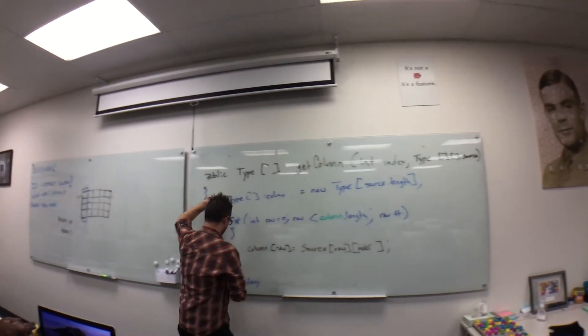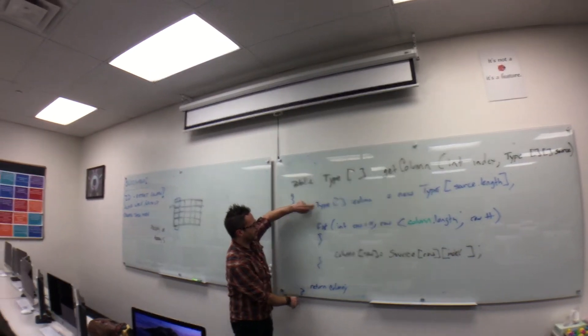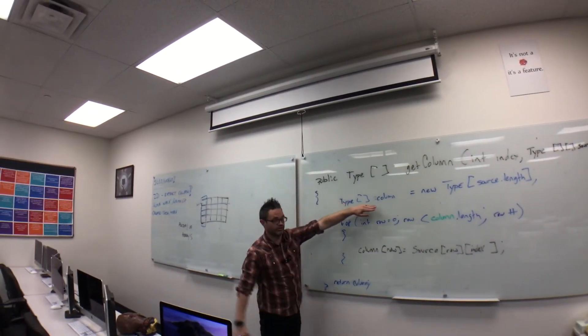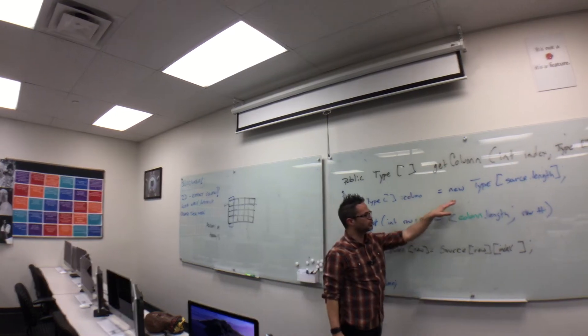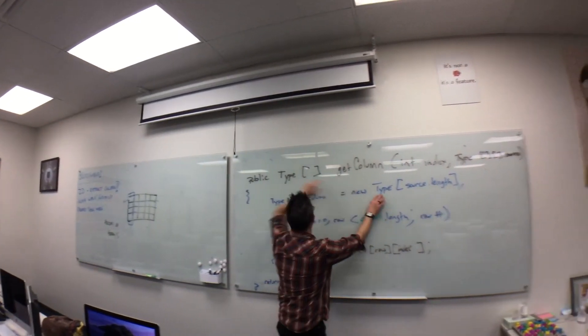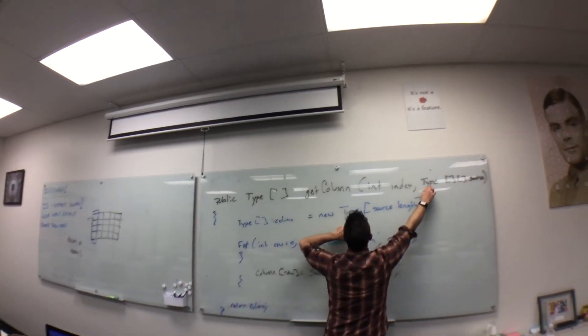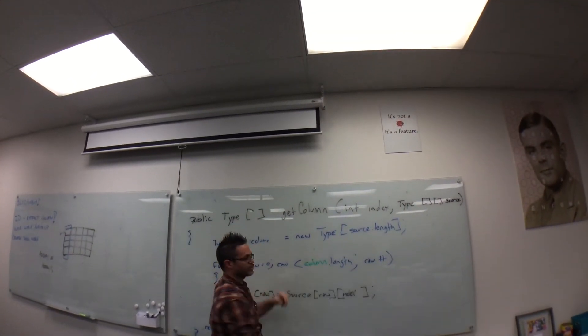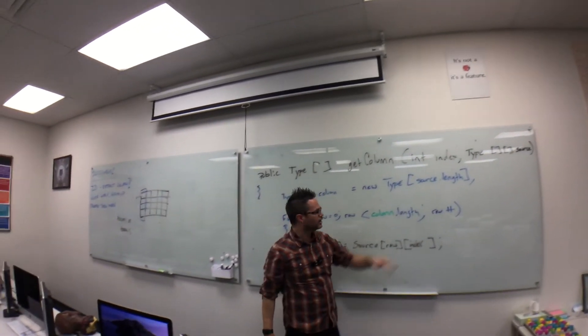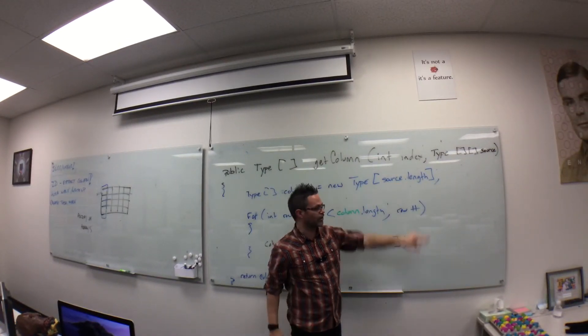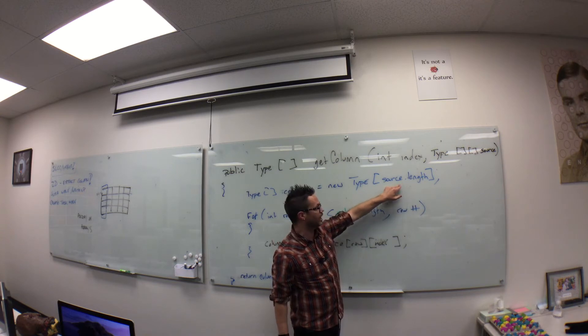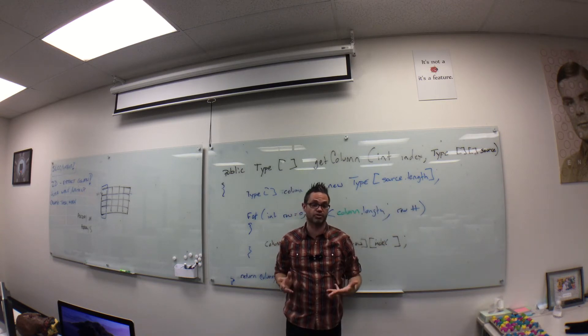The first step we want to do, and our last step, are the same. We're going to declare an array of the type we're working with, and I'll give it the creative name of column. When I create that column, it's a new type, whatever type I'm matching, because that's what I'm taking out of the array itself. It's going to be of source.length in size. I want to have as many rows as are inside that, so that's where source.length comes in, because .length returns the number of rows inside a 2D array.